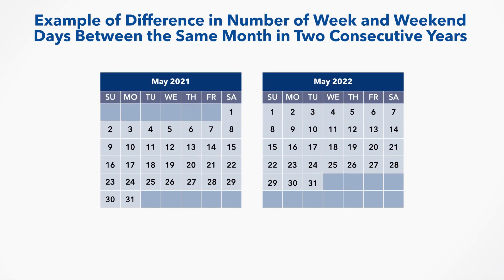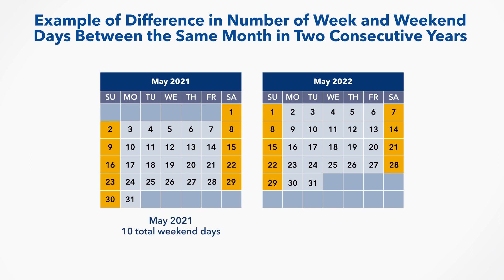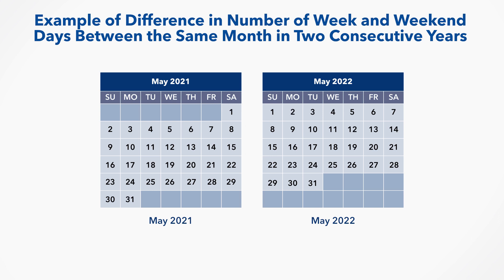Here we can see an example of the difference in the number of weekend days between the same month in two consecutive years. In 2021, May had five Saturdays and five Sundays, that is a total of ten weekend days. However, in 2022 May had five Sundays but only four Saturdays, for a total of nine weekend days. Similarly, the number of each weekday may be different between the two years. For example, in May 2021 we had four Tuesdays, while in May 2022 we had five.